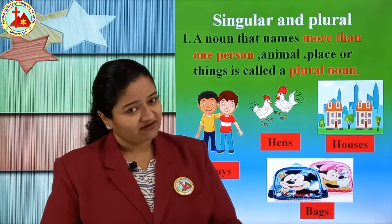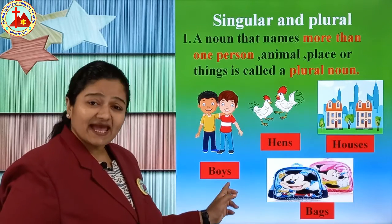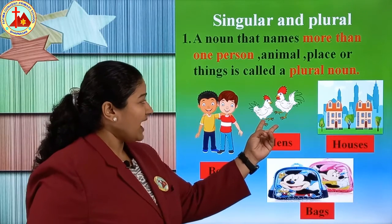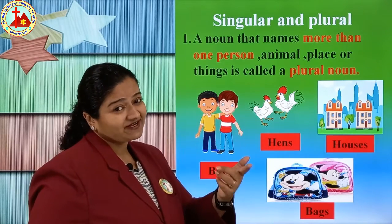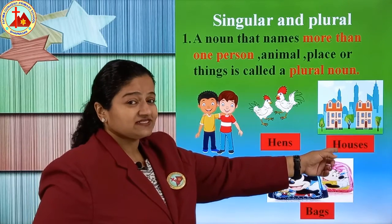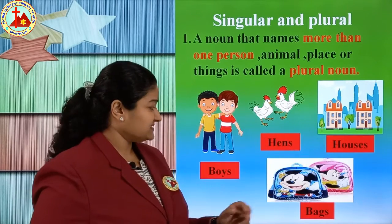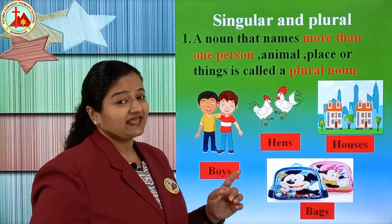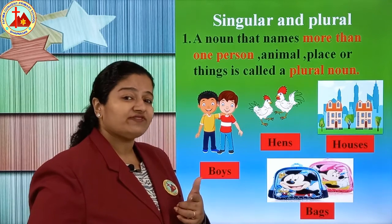One means singular, more than one means plural. You can see two boys, so it is written B-O-Y-S, boys. What do we add? Last S. Next one is two hens — H-E-N-S, hens. If one hen, then H-E-N, and more than one, you add only S. Next one is houses — H-O-U-S-E-S. More than one, two bags are there, so we say bags — add last S.